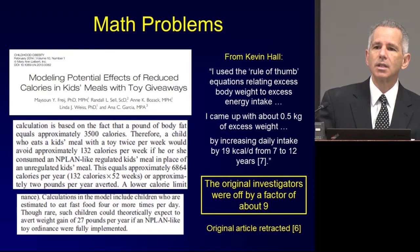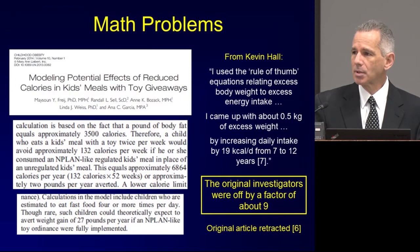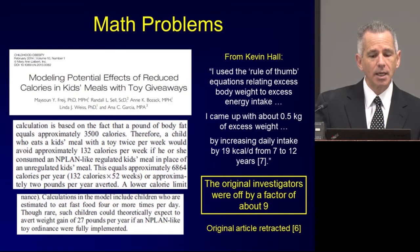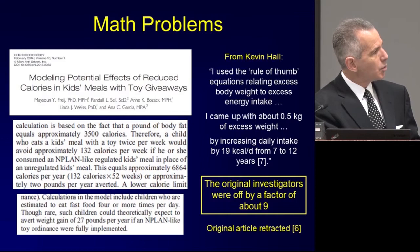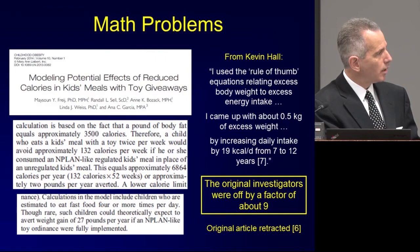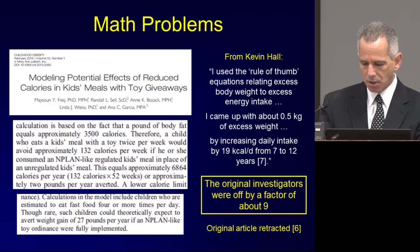One of the things we see quite commonly in the field of science in general, and as much as anywhere in nutrition and obesity, is that mistakes are common. One common way people make mistakes is mathematical errors or poor mathematical thinking. I give one example here — a paper I stumbled on about two years ago called 'Modeling Potential Effects of Reduced Calories in Kids' Meals with Toy Giveaways.' This quotation said that if a policy reduced calories in a typical kid's meal, a child eating an average of two kids' meals at a fast food restaurant per week would avoid approximately 132 calories per week, leading to about two pounds less weight gain per year. That sounded a little ambitious to me — maybe not crazy, but a little ambitious.